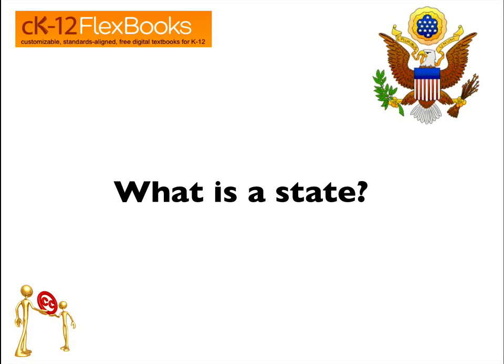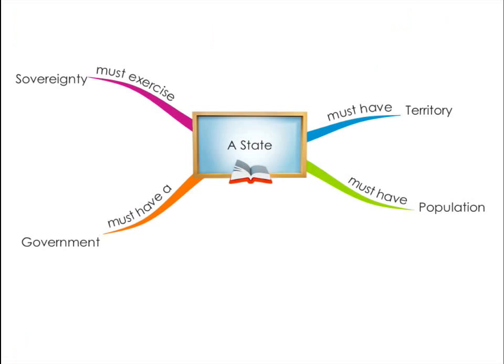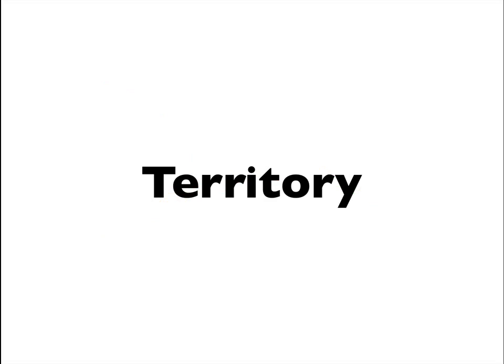What is a state? There are four critical or necessary characteristics of a state in political science. They are territory, population, government, and sovereignty.